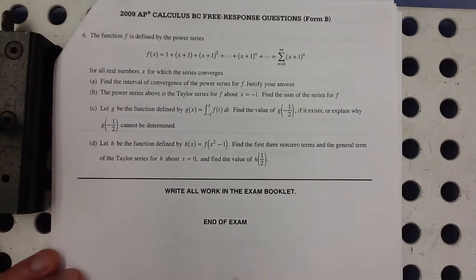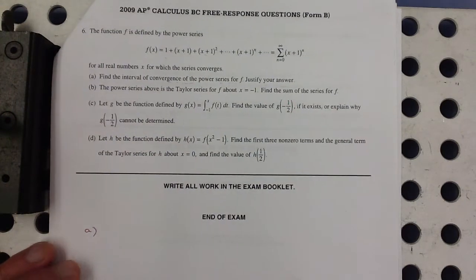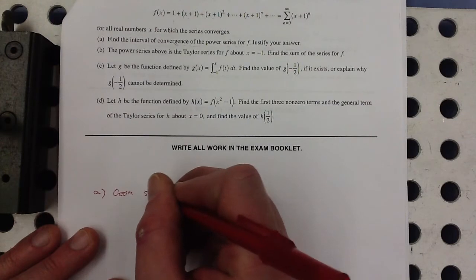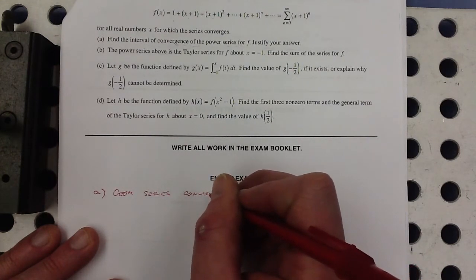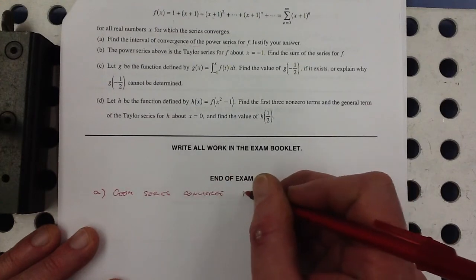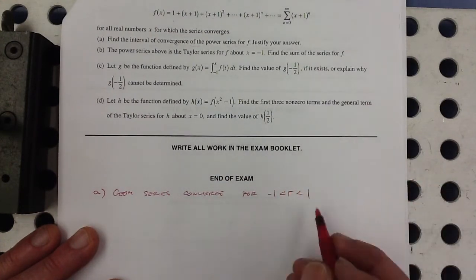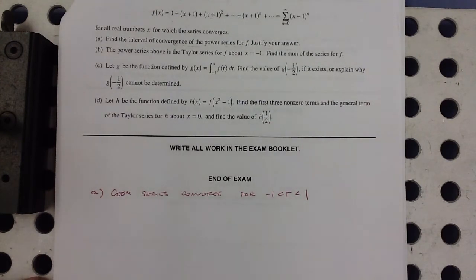But in fact, this is a geometric series. Geometric series converge only when the R is between negative 1 and 1, period. No checking endpoints, no nothing. If it's a really bona fide geometric series, the R has to be strictly between negative 1 and 1, right? Because it's a multiplier. If you start multiplying the terms by 1, you're not going to decrease to 0.